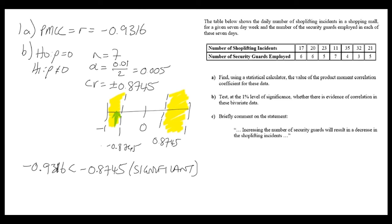Then we'll formalize this with our two conclusions. One mathematical: we have enough evidence to reject H0. And one in context: we have enough evidence that there is correlation between the number of shoplifting incidents and the number of security guards. I haven't specified whether it's positive or negative because the hypotheses didn't specify either.